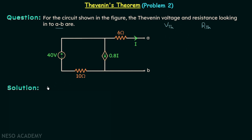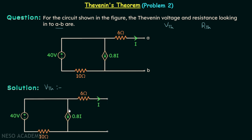We will first calculate the Thevenin's equivalent voltage VTH. We will mark down VTH in this network — it is the voltage at this open circuit. We will focus on current I, which is the current in the branch that is open circuited. This means it will encounter infinite resistance in its path, and therefore this current will be equal to zero. This means the current in the branch which is 0.8 times I will also be equal to zero.